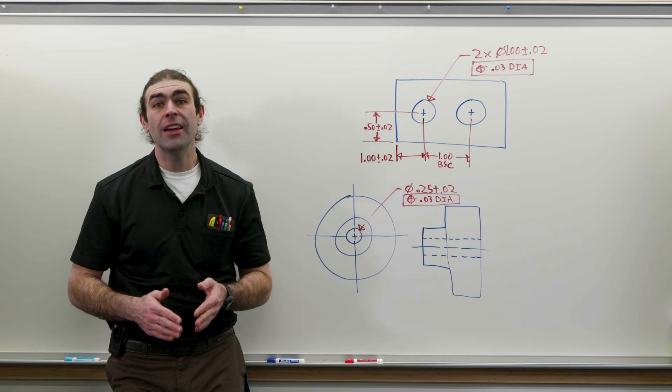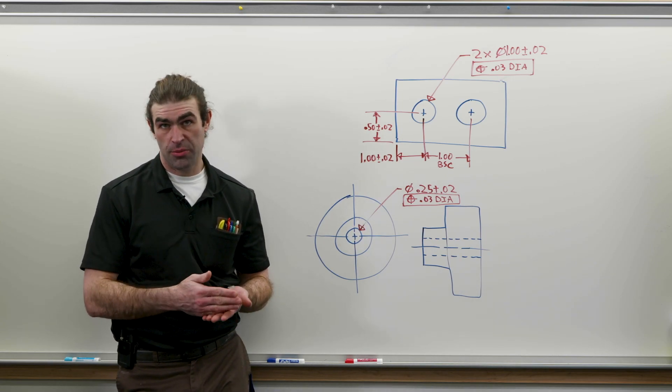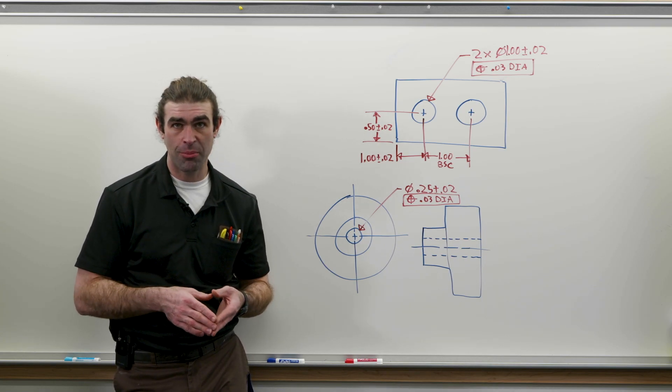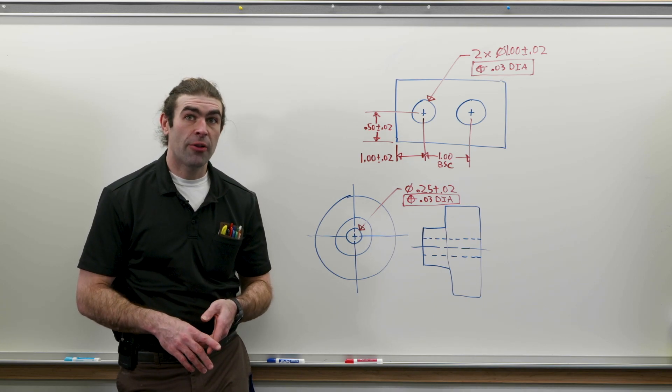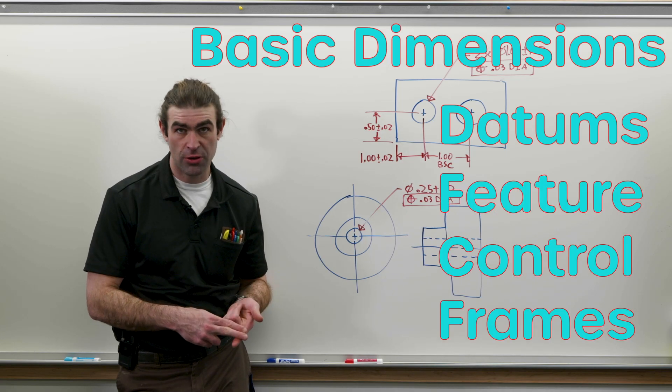In the 1982 standard, you have to use basic dimensions and datums, explicit datums in the feature control frame. That is the current practice. The three ingredients to a position tolerance are basic dimensions, datums, and feature control frames.